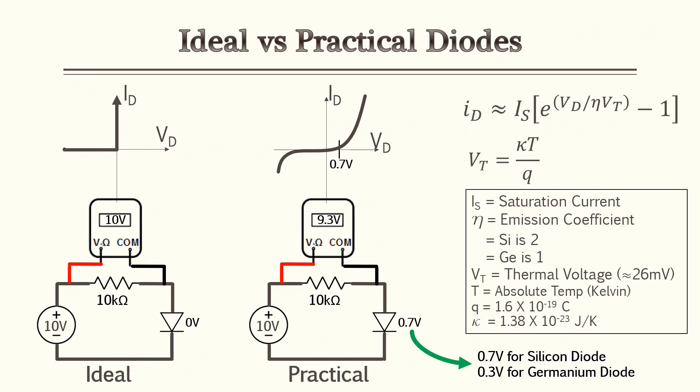In some of your PE reference material they have ideal diodes and practical diodes. An ideal diode acts as a perfect short or a perfect switch, so there will be zero voltage drop across the diode. However in the majority of your circuits and calculations you'll most likely come across a practical diode, meaning there's a 0.7 volt or a 0.3 volt voltage drop depending on what type of diode it is.